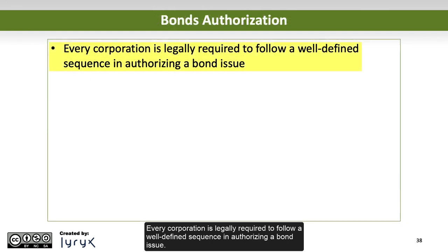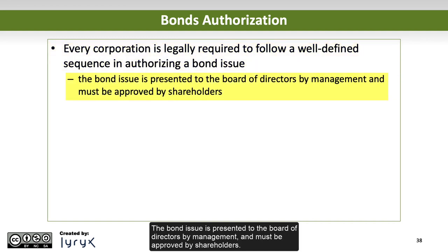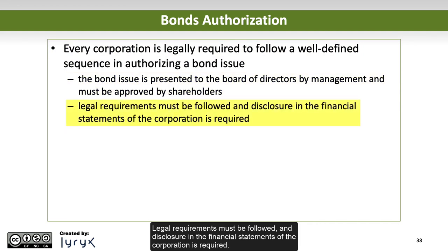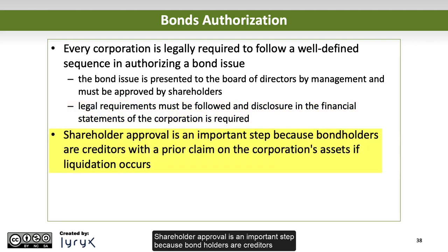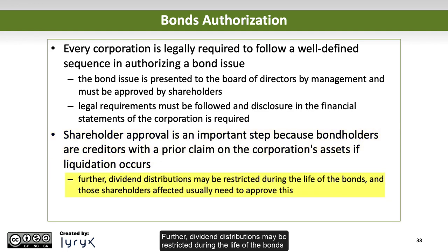Every corporation is legally required to follow a well-defined sequence in authorizing a bond issue. The bond issue is presented to the board of directors by management and must be approved by shareholders. Legal requirements must be followed and disclosure in the financial statements of the corporation is required. Shareholder approval is an important step because bondholders are creditors with a prior claim on the corporation's assets if liquidation occurs. Further, dividend distributions may be restricted during the life of the bonds, and those shareholders affected usually need to approve this.